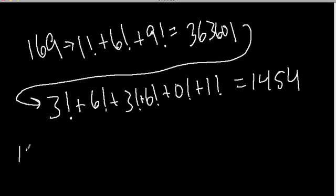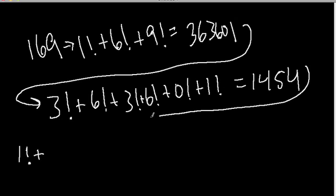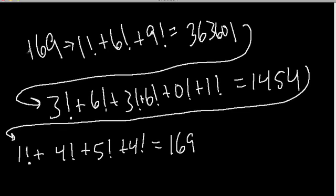This time 1,454 is 1 factorial. I'm going to draw the arrow. Plus 4 factorial plus 5 factorial plus 4 factorial. Here we have 1 plus 24 plus 24 plus 120, and that is 169. So we created that loop through three steps.